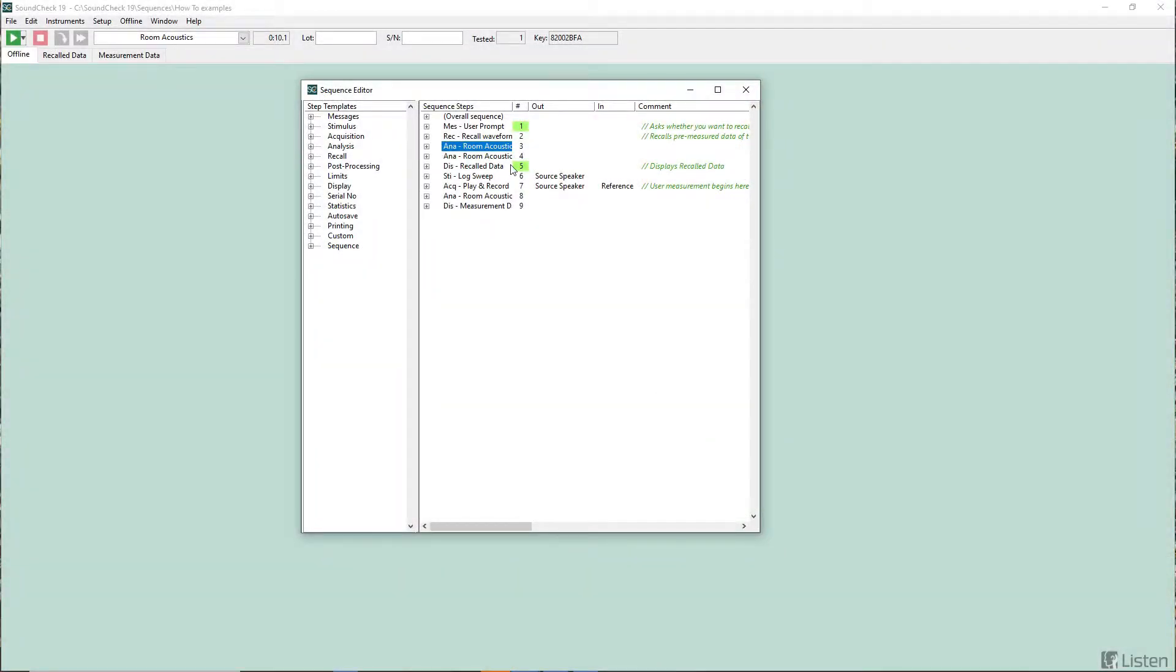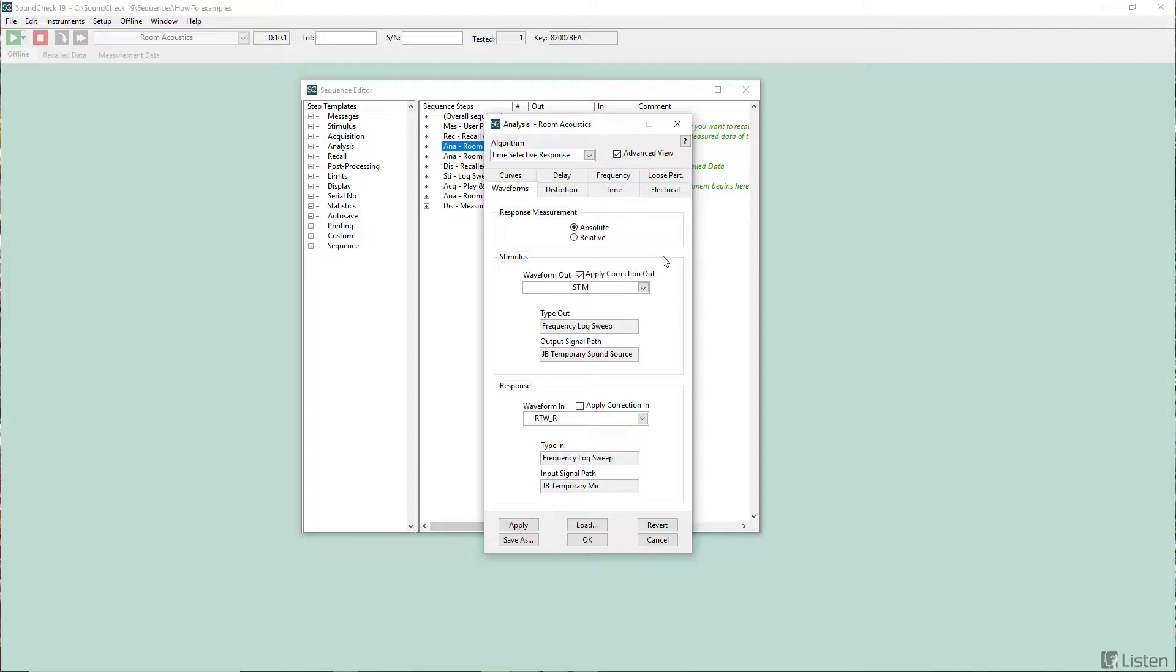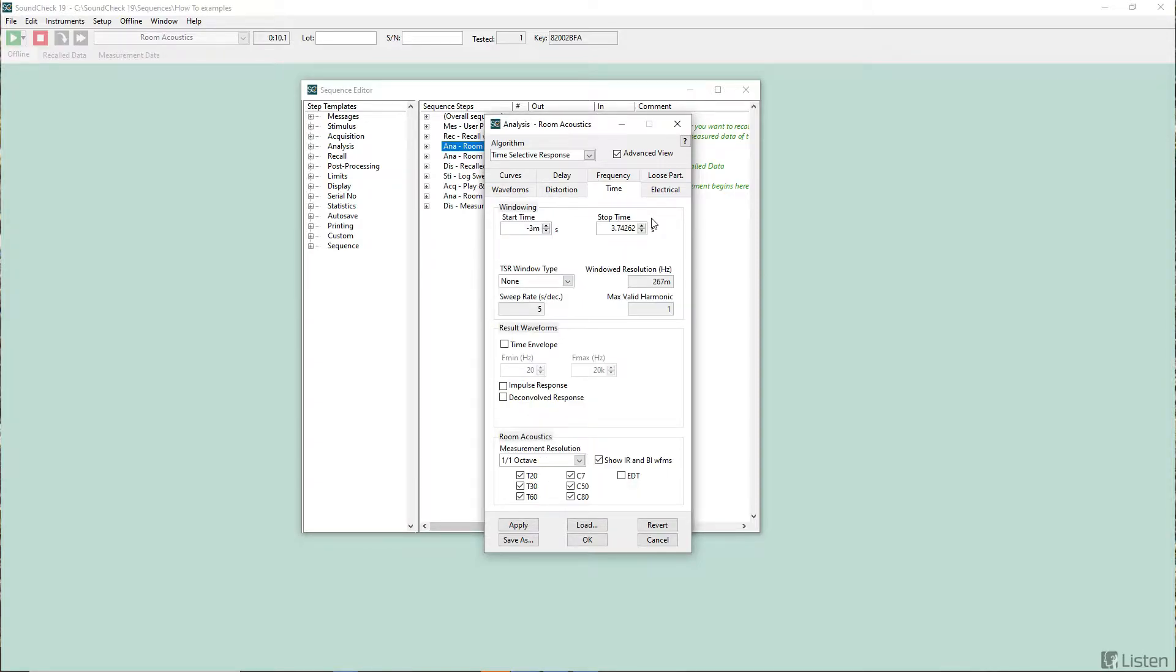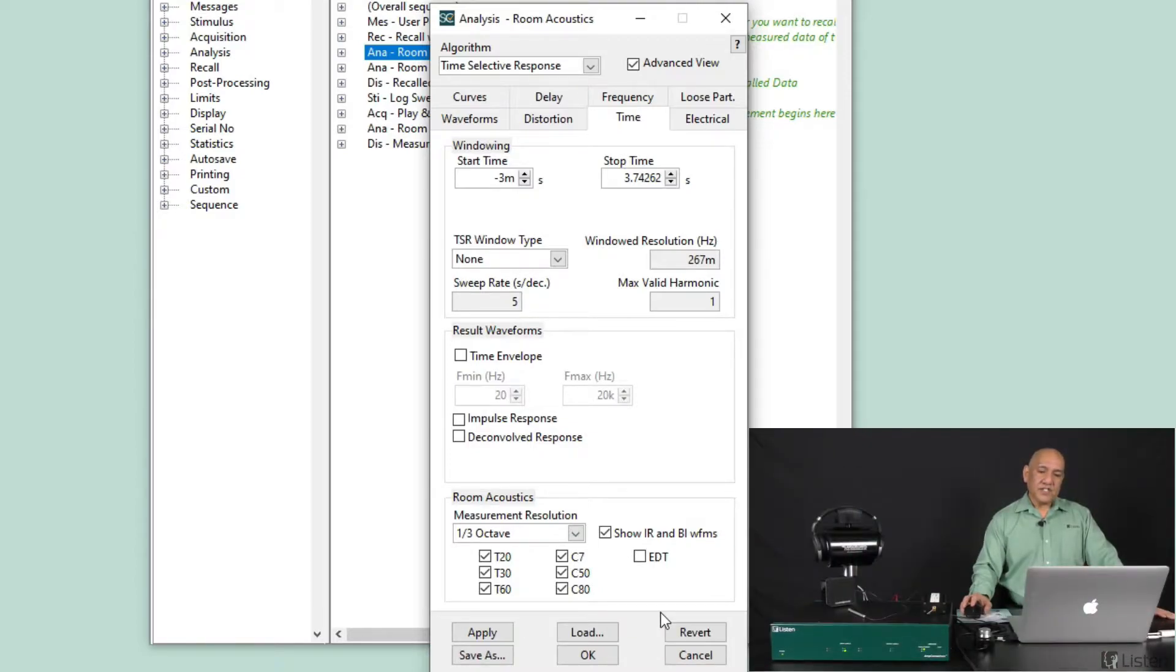So let's look at the sequence. I'm going to open up the analysis step. As I said, we'll use a log sweep with a TSR algorithm. And that's what's selected up here. And if I move over to the time tab, we'll see the room acoustics settings at the bottom. Here we could choose what our octave resolution is, full octave or third octave. On the left side are reverb times, and on the right side, clarity. Think of clarity as early energy, sound energy ratio against late sound energy ratio, where late reflections are unfavorable. And then we have a checkbox here to also show the impulse response and the backward integrated impulse response.